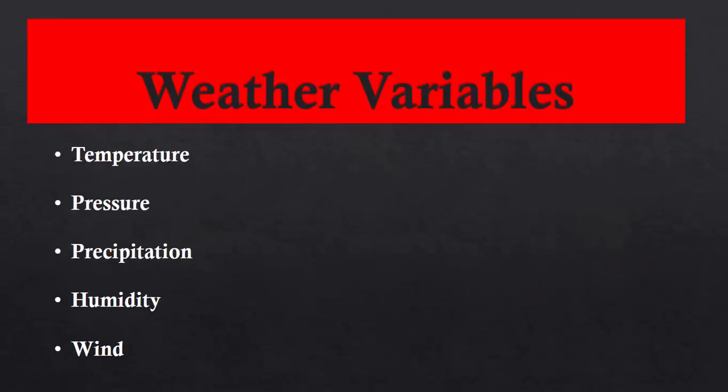Now, weather variables — what are weather variables? These are also known as the elements of weather. These are: temperature, pressure, precipitation, humidity, and wind.